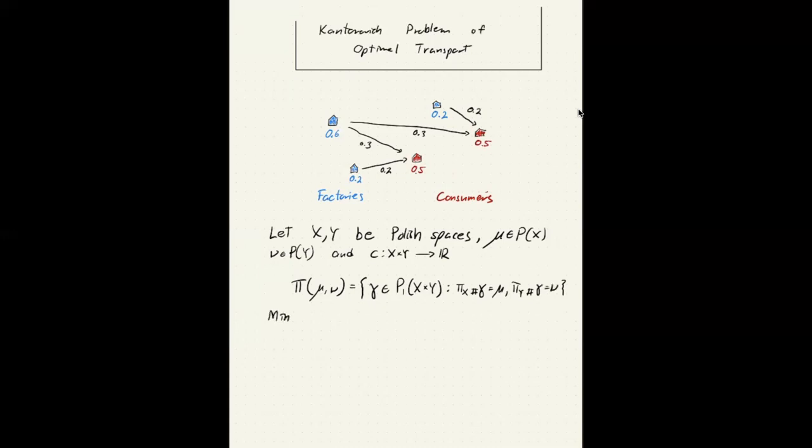So given this, Kantorovich problem is to minimize the integral of the cost function against this transport plan. So we're integrating over the product here. And we're minimizing this over all transport plans, so over this Π(μ,ν).